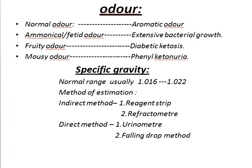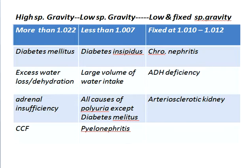Specific gravity normal range is usually 1.016 to 1.022. Methods of estimation — indirect methods: Number 1, reagent strip method; Number 2, refractometer method. Direct methods: Number 1, urinometer; Number 2, falling drop method.